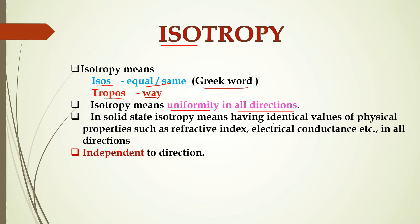Isotropy means having identical values of physical properties — such as refractive index and electrical conductance — in all directions. The physical properties have an identical, meaning similar, value in all directions. That is very important. Isotropy is independent of direction.